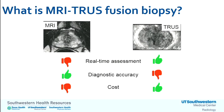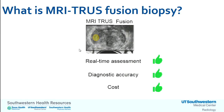Ultrasound does have advantages over MRI: the ability to provide real-time assessment and lower cost and availability. Some clever people had the idea to combine the strengths of both so they complement each other — what we call MRI-transrectal ultrasound fusion. By doing this, we can project the lesion seen on MRI onto the ultrasound, combining the real-time assessment of ultrasound, the diagnostic accuracy of MRI, with the cost-effectiveness of ultrasound.